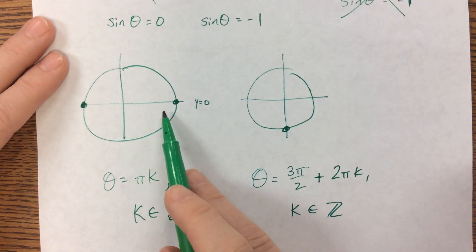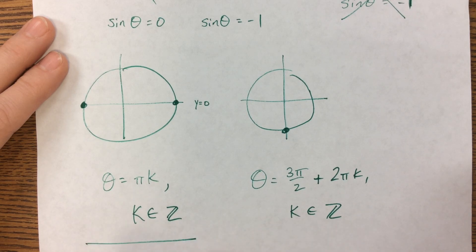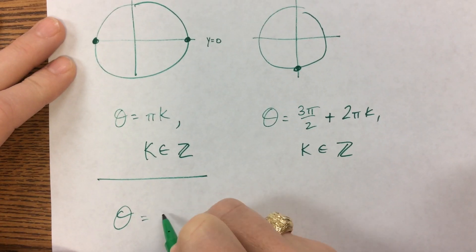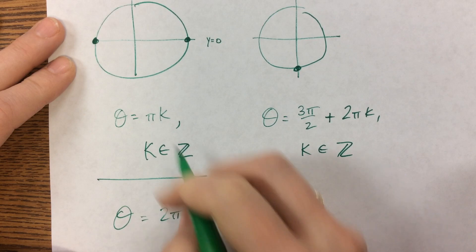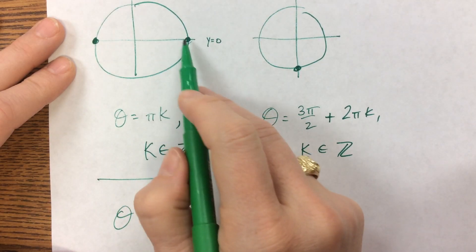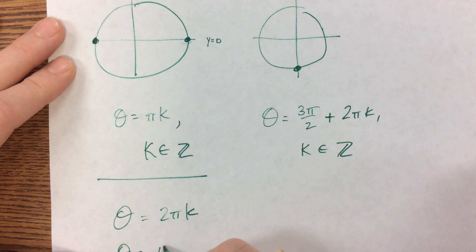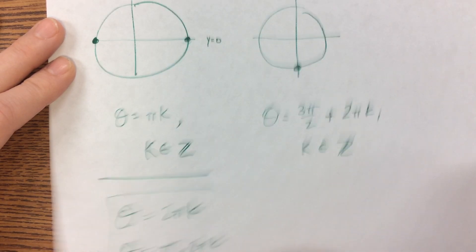If you had told me over here that theta was two pi k, that says zero plus two pi k, so that gives me all of the values that land here. Or if you had told me that theta was equal to pi plus two pi k, if you had given me both of these scenarios,